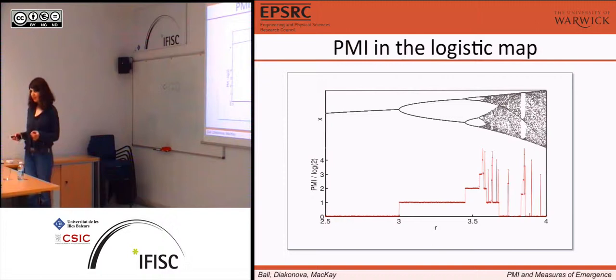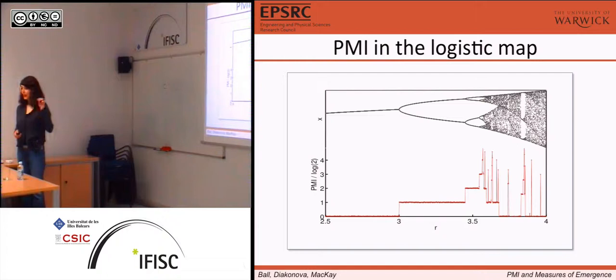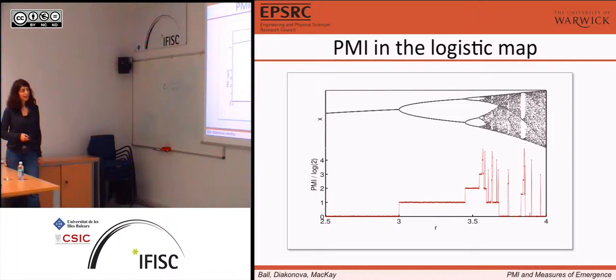This is a measure of convergence that says: how many choices does a system have to make? For example, in this case, the choice is a choice of phase. It could either be oscillating up-down-up-down, or it can do the reverse. And actually, in the chaos part, it does the same thing — it jumps across chaotic bands, where it lands is determined by the rule, but the periodicity is still there.